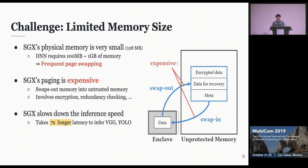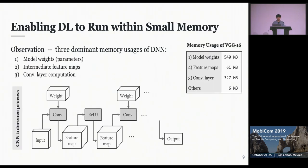If you want to run VGG or YOLO model inside SGX, you need seven times longer latency. We addressed this problem by enabling deep learning to run within a very small size of memory. For the first step, we observed three dominant memory usages: model weights, intermediate feature maps, and convolution layer computation.